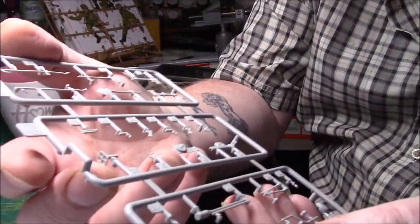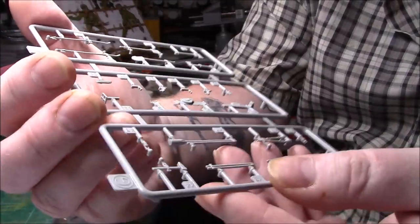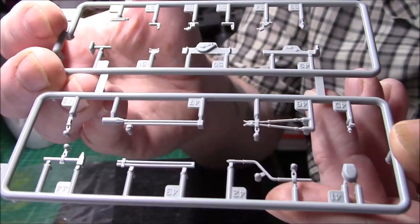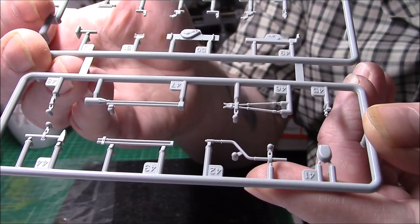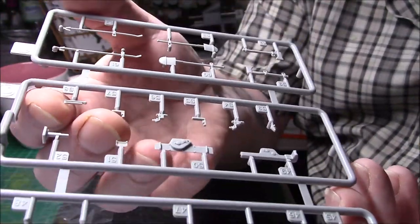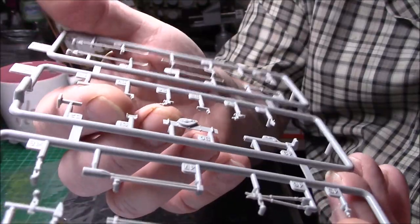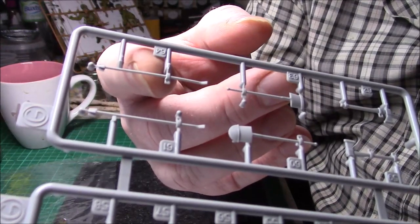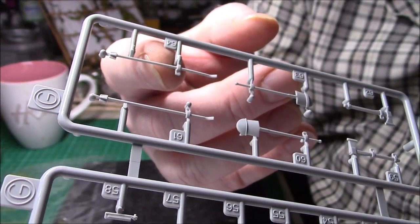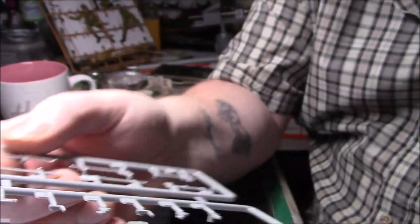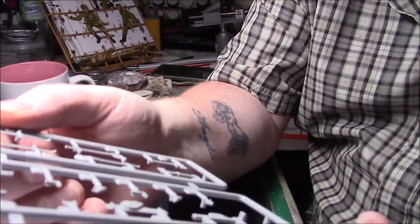Here we go, sprue G. We have some more pioneer tools, barrel cleaning rods, bolt cutters, handles, a driver. The jack which looks in a few parts, which is usual for Dragon. They look nicely detailed. I don't know what they are, the big long bars, things to do with the track. Track jacks, I have no clue. Nice spade, couple of spades. We had another sprue of pioneer tools, so probably some of them won't be used.